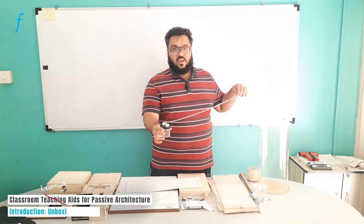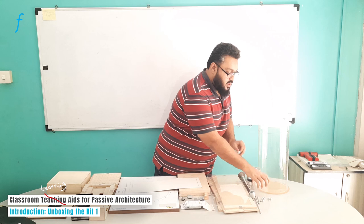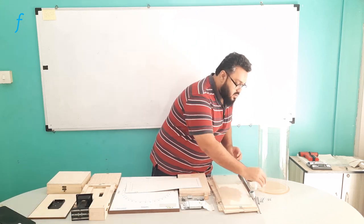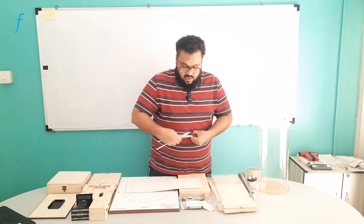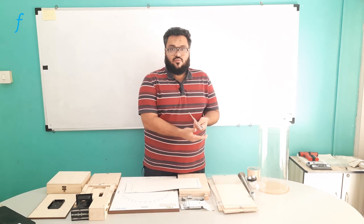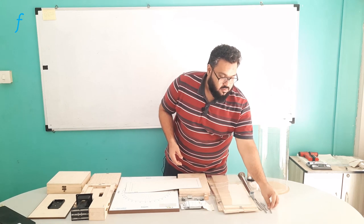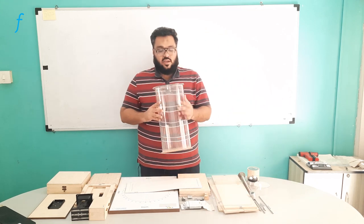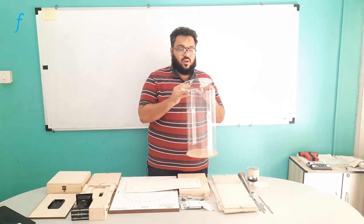This is a small water container, which will be useful for another experiment. This is a water trough, and these are pipes of different sizes — all of this is going to be used for the water experiment. Lastly, this is the water tank in which we will be filling the water. So this here is Kit 1, thank you.